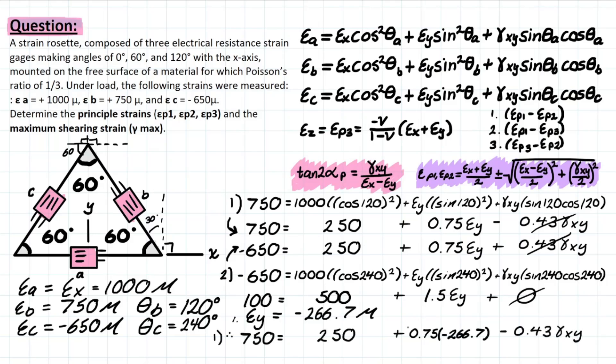All righty, so bringing back equation 1, plugging in your epsilon_y and isolating for your shearing strain xy, you're going to be left with a value that looks something like this. You're going to have negative 1616.6.